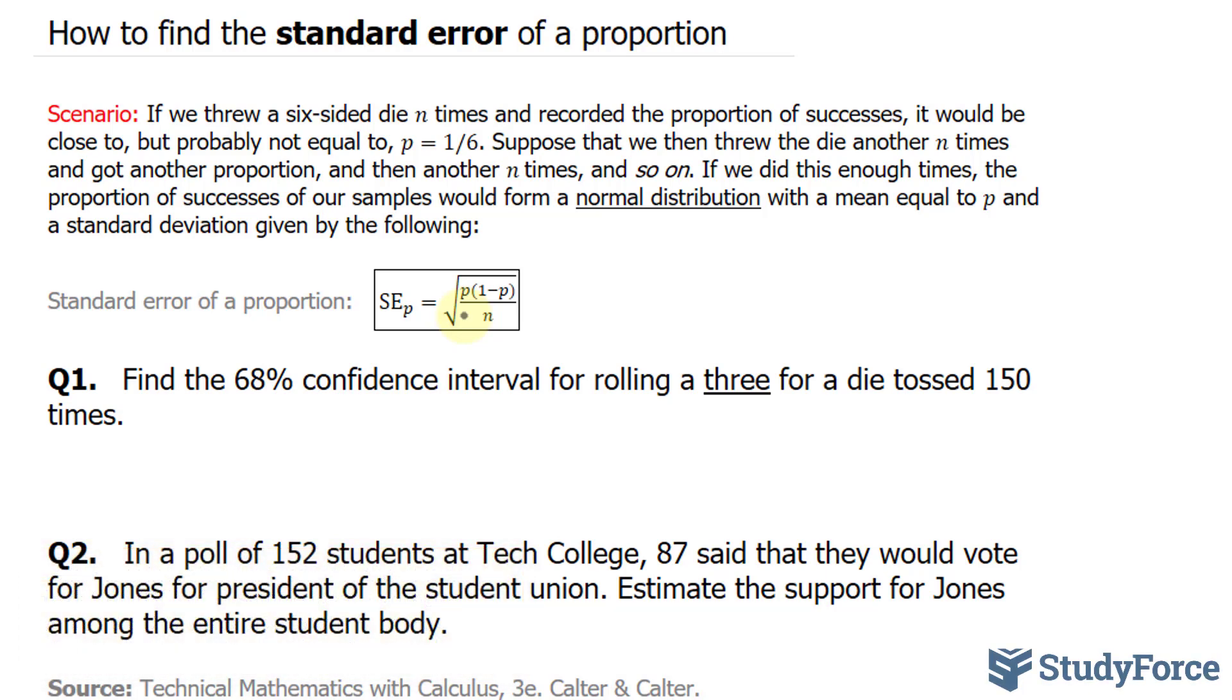In question 1, we're asked to find the 68% confidence interval for rolling a 3 for a die tossed 150 times. Since it's being tossed 150 times, I'll set n is equal to 150.